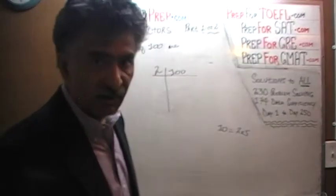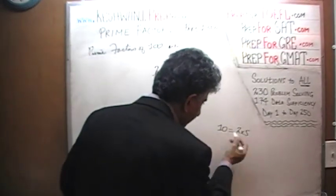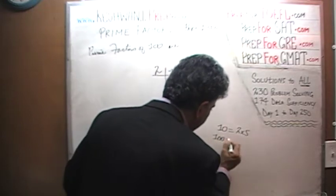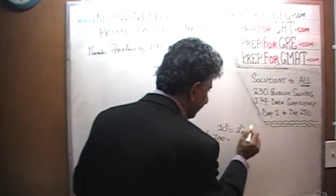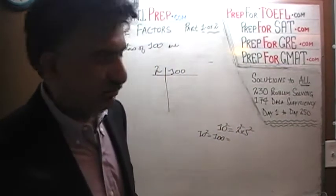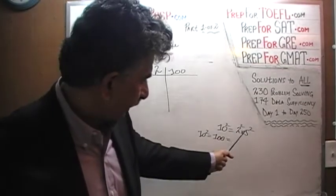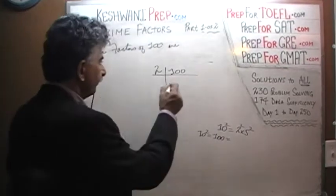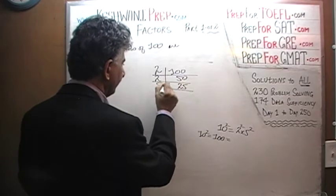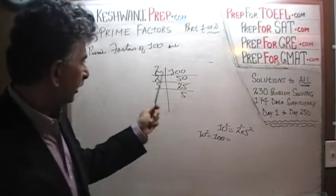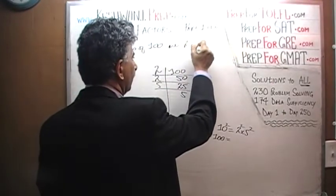If 10 equals 2 times 5, then 100, which is simply 10 squared, should equal 2 squared times 5 squared. But it doesn't change the fact that the prime factors of 100 are the same as the prime factors of 10: 2 and 5. Dividing: 100 divided by 2 gives 50, divide by 2 again gives 25, divide 25 by 5 gives 5. So 100 equals 2 squared times 5 squared, and the prime factors of 100 are 2 and 5.